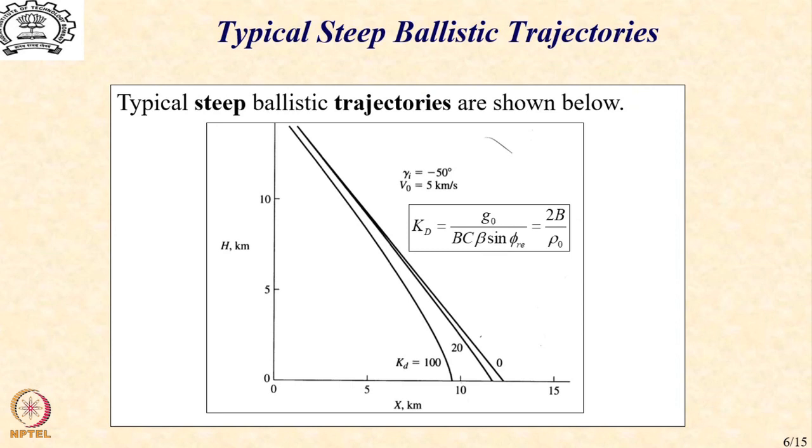Here we see the trajectories which are roughly from a height of 15 kilometers down to the surface of the earth and we note that for a major part of the trajectory it is merely a straight line.